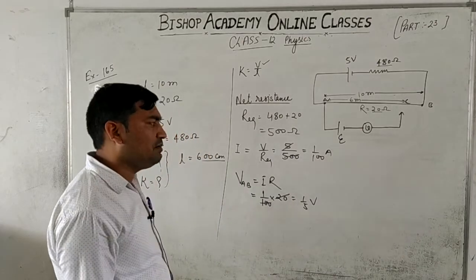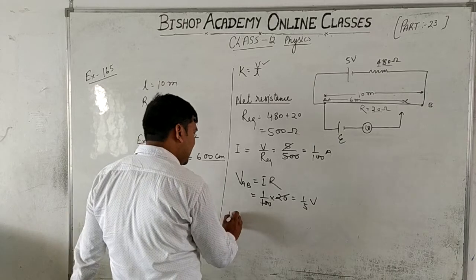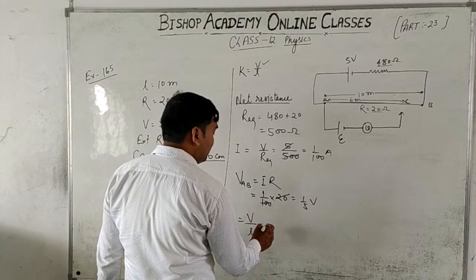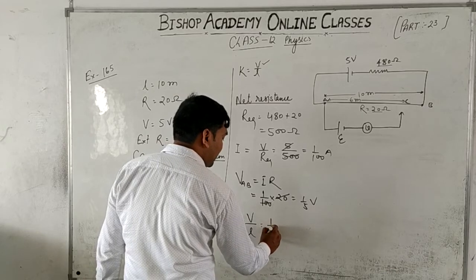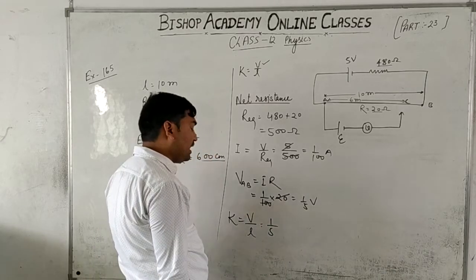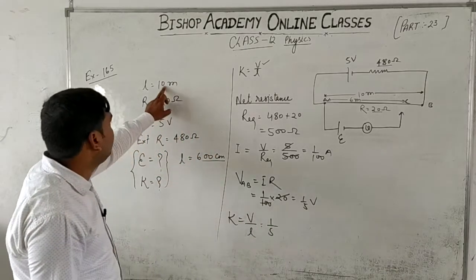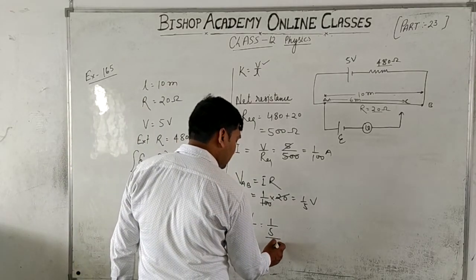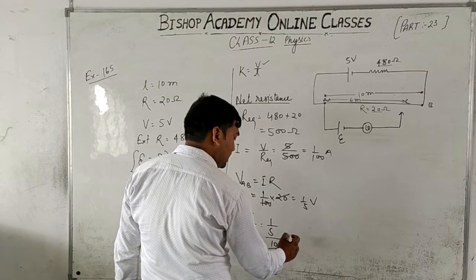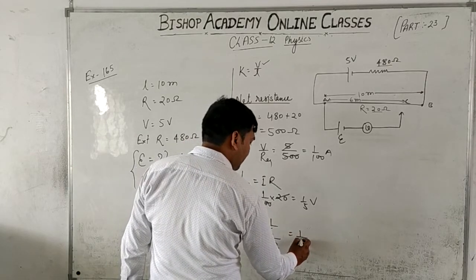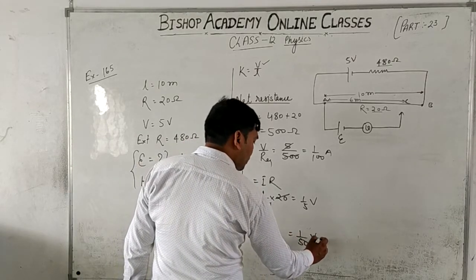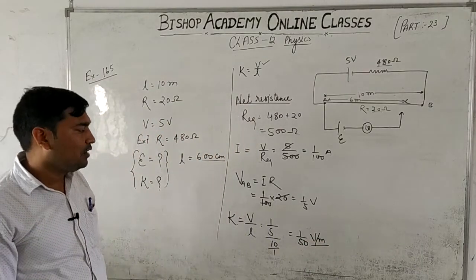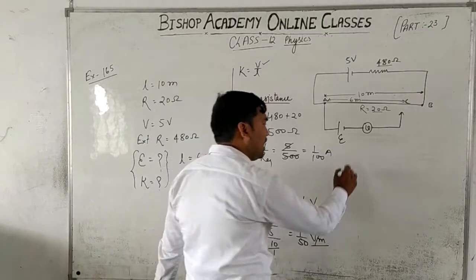Voltage across AB is obtained. Now we need to find the potential gradient K. K = V / L, where V is the voltage across the wire and L is its length. V = 1/5 volt and L = 10 meter. So K = (1/5) / 10 = 1/50 volt per meter. This is our value of potential gradient K.